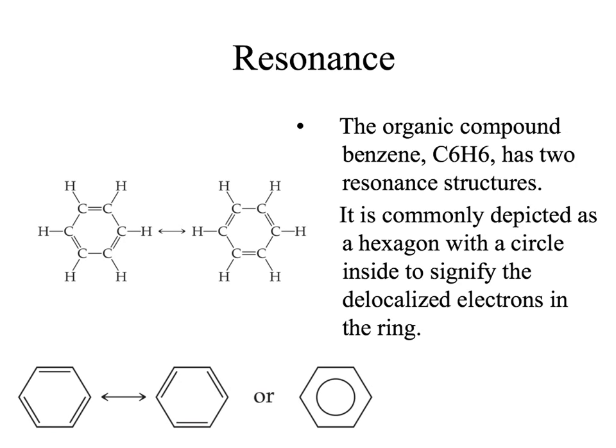If you go on to study organic chemistry, you'll find that resonance is particularly important. This is benzene, C6H6 — it has two resonance structures. It's sometimes depicted with alternating lines in a ring, and sometimes the resonance is shown by a circle inside the ring. The circle means double bonds that are resonating.